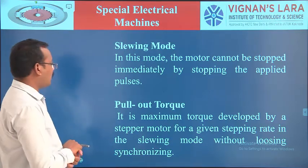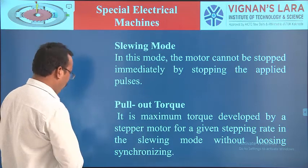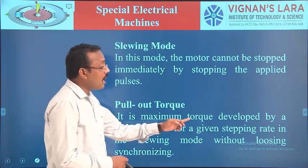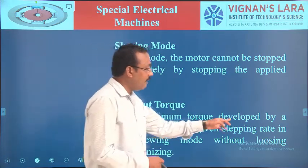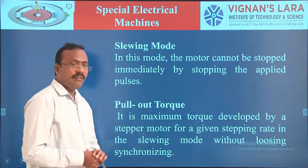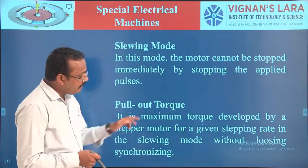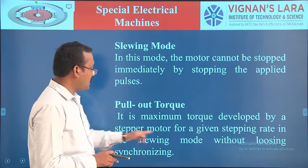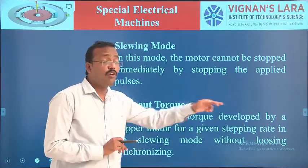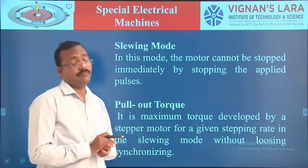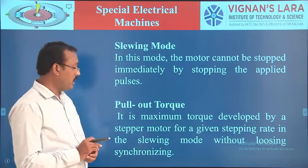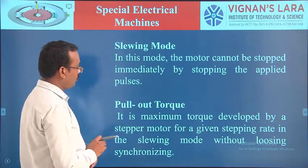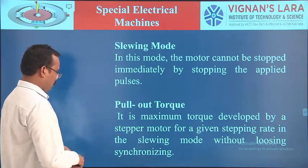The next one is pull-out torque. It is the maximum torque developed by a stepper motor for a given stepping rate in the slewing mode without losing synchronization. This is the pull-out torque of the stepper motor.